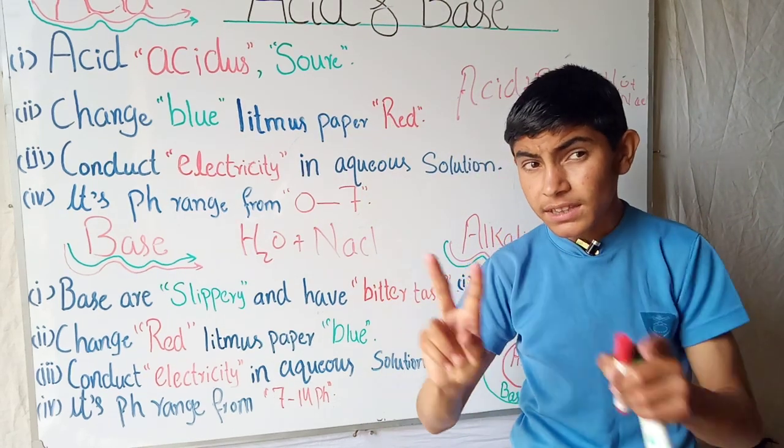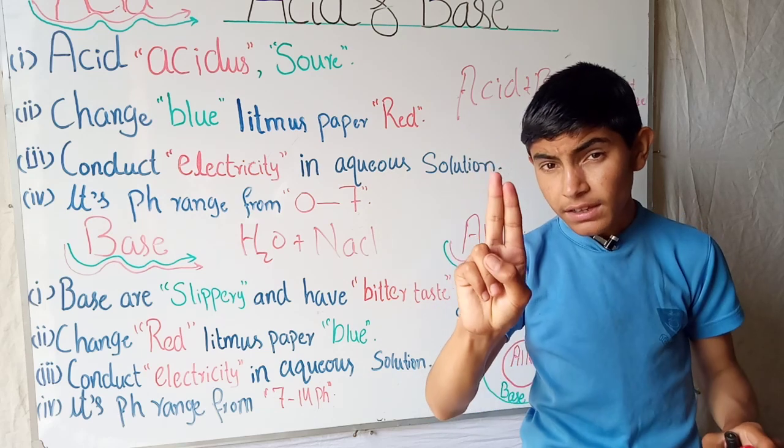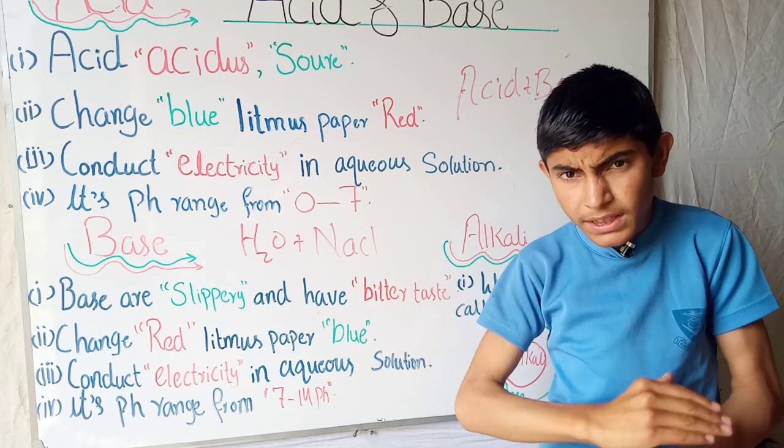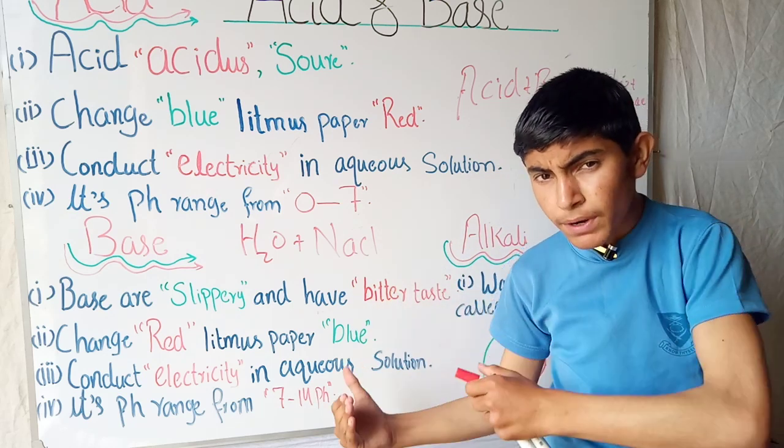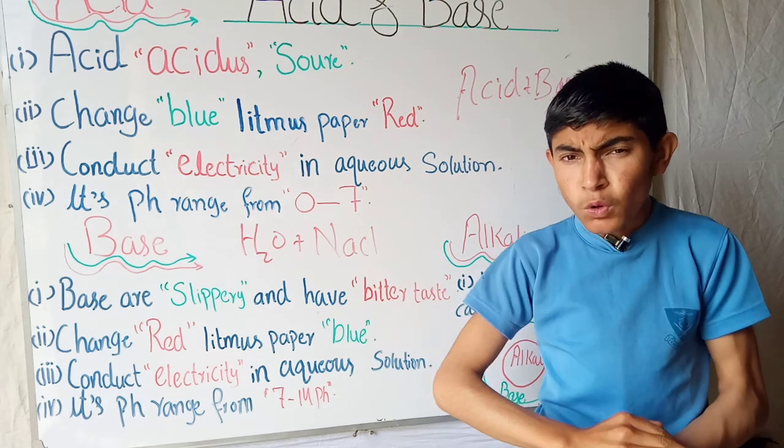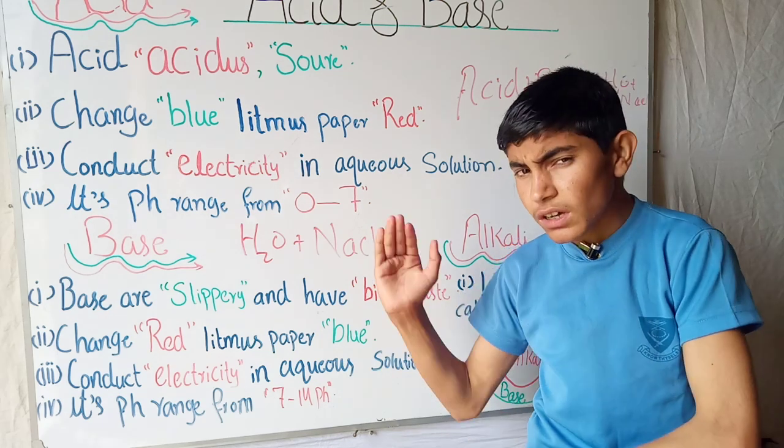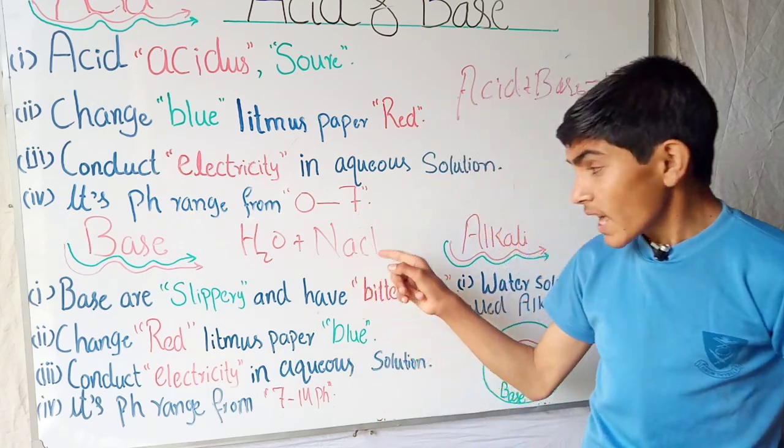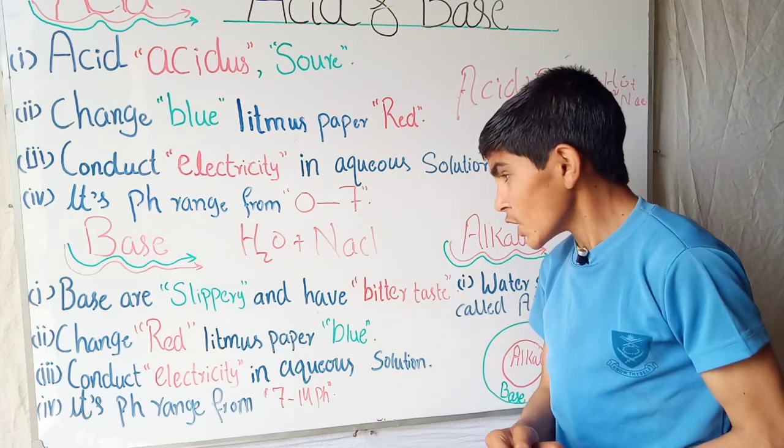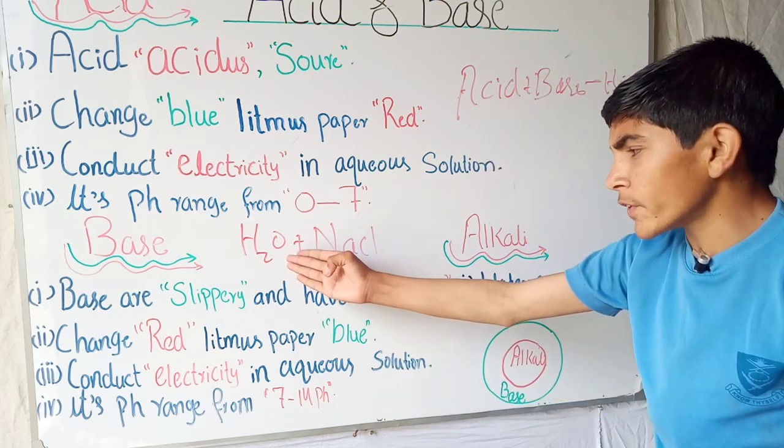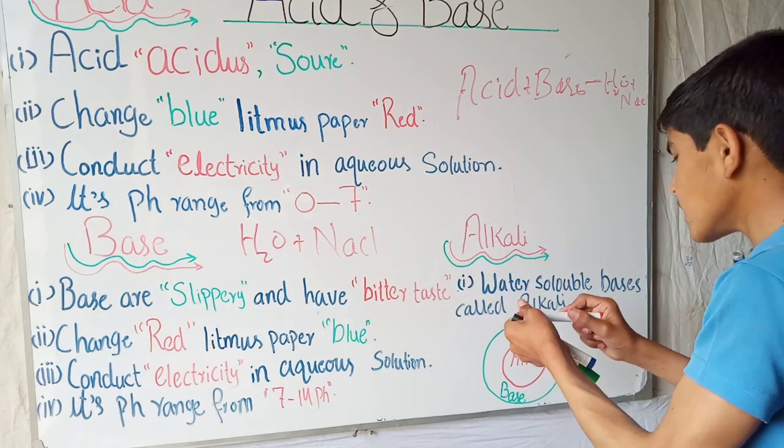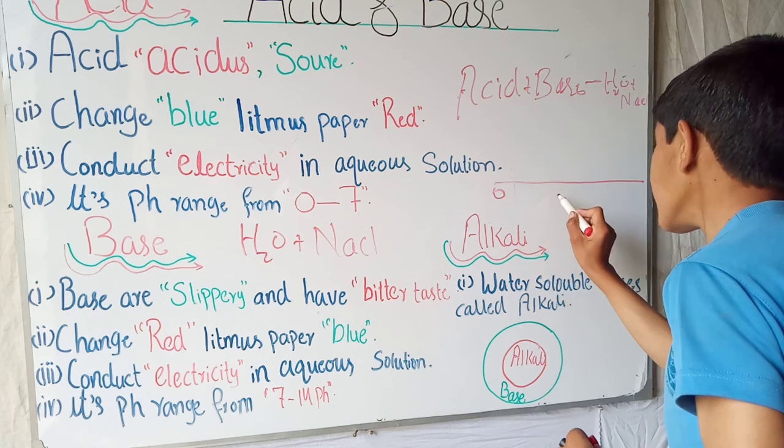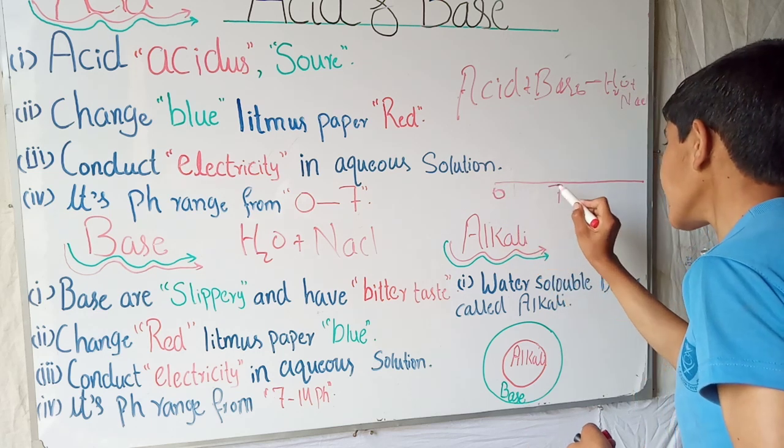When the acidity and basicity add together, they give us neutral things which are water and NaCl. Therefore, we mention the pH of H2O and NaCl is neutral. On the scale from 0 to 7 is called acid.